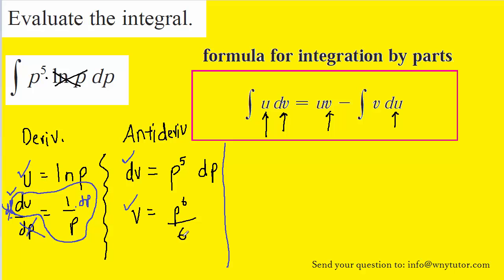And as we plug in, it's going to be helpful to refer back to our work over here on the side. So we have the integral of u, now u was the natural log of p, times dv, which we determined to be p to the fifth dp, equals u, which again is the natural log of p, times v, which was p to the sixth over sixth, minus the integral of v, which we again determined to be p to the sixth over sixth, times du. And du was one over p dp.